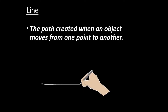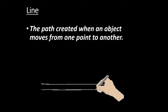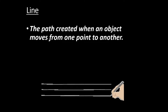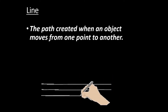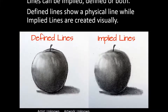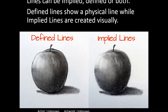Let's dive into line. Line is a very straightforward concept — it is the path created between two points. There are two different types of line: defined lines and implied lines. Defined lines are lines that you can actually see; they are visible. Implied lines, however, are lines that you will not see, but you can fill in the gaps between values of objects to discern between two different objects or an object and the background.